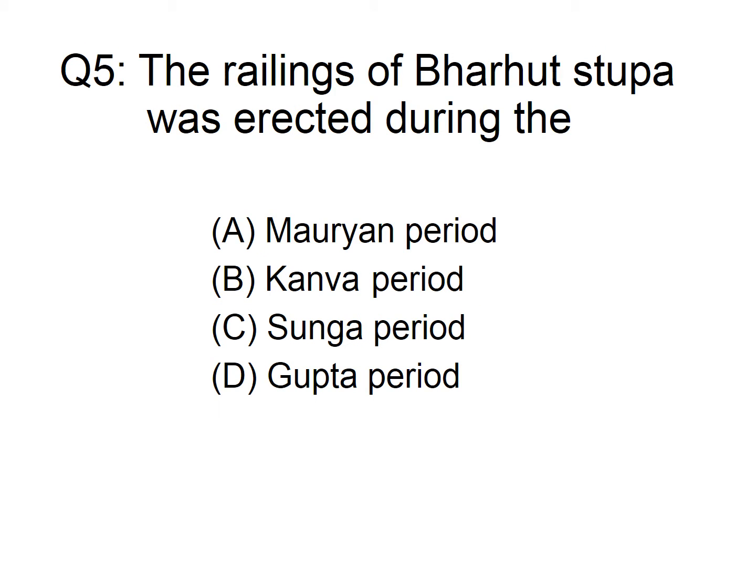The railings of Barhut Stupa were erected during which period? Option A: Mauryan period, B: Kanva period, C: Sunga period, D: Gupta period. The correct answer is option C, Sunga period.